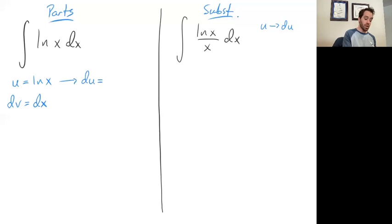In this case du ends up being 1 over x dx and v ends up being, now we're going to integrate 1 dx, so v ends up being x.